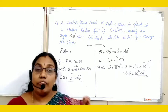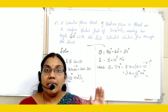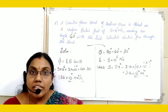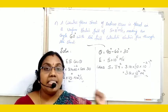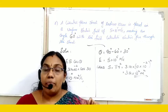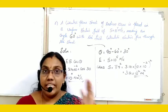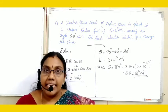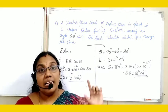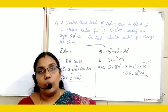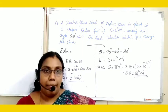The main thing to keep in mind is the value of theta. The circular sheet is placed at an angle 60° with the field, so theta — the angle between area vector and electric field — is 90 − 60 = 30°. This is the key point.